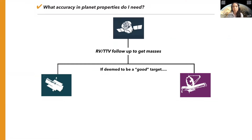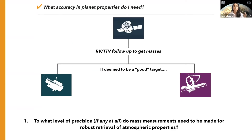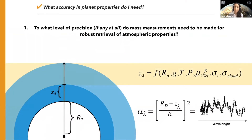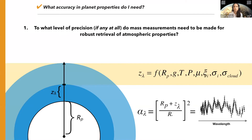This naturally begs the question of to what level of precision, if any at all, do we need mass measurements to do robust retrieval analyses of atmospheric properties? The transmission spectrum is just the radius of the planet plus this parameter Z-lambda, which increases and decreases based on whether or not you have high atmospheric absorption. Z-lambda is related to the radius, the gravity of the planet, the temperature, the pressure, the mean molecular weight, the concentration of all the gases, the abundances, and the gas and cloud cross-sections.